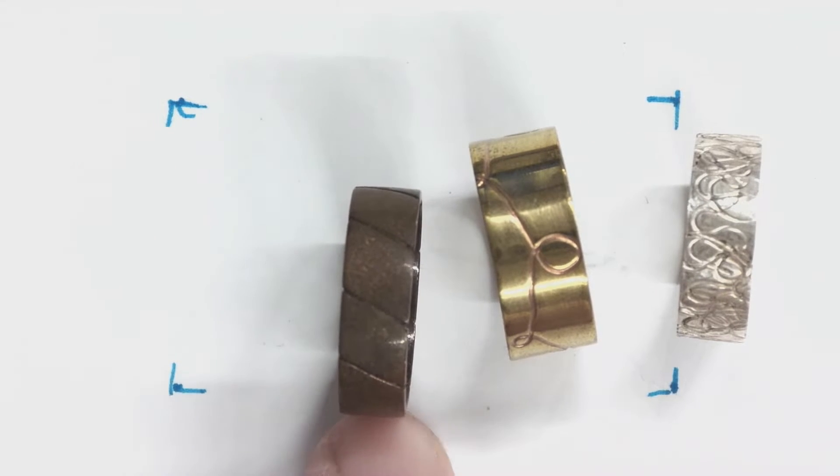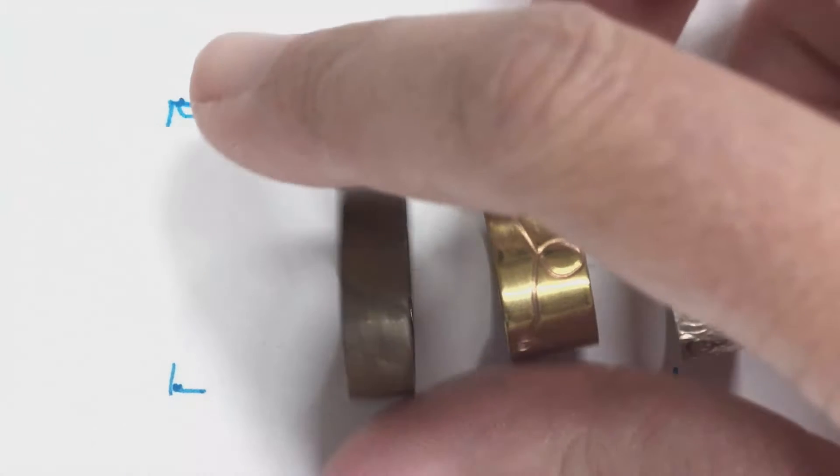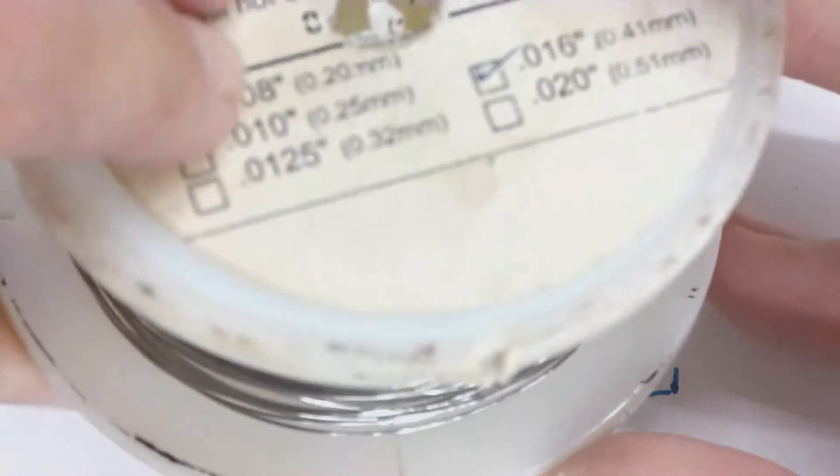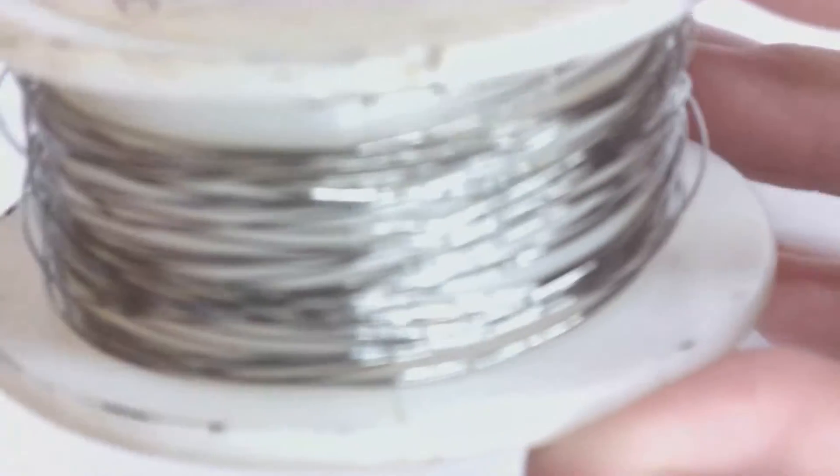The thing that cannot be embossed is steel because steel will ruin the machine, the rollers on the machine. I have got some steel wire in my lab, which I hide from you because it's really important to me that that steel not touch the steel rollers. It will ruin them.